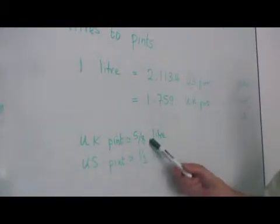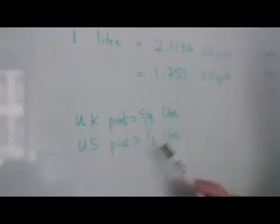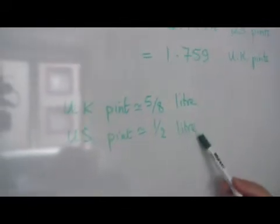In other words, a U.K. pint is about five-eighths of a liter. The U.S. pint is half a liter.